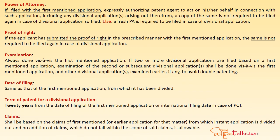In case of a divisional application, some important points: For power of attorney filing, if it was filed with the first-mentioned or parent application, then a copy is not required to be filed again for the divisional application. If it was not filed, then a fresh power of attorney must be filed. Regarding proof of right, if the applicant has submitted proof of right with the first-mentioned application, it is not required to be filed again for the divisional. Examination is always done vis-à-vis the first-mentioned or parent application, and other divisional applications examined earlier, to avoid double patenting.